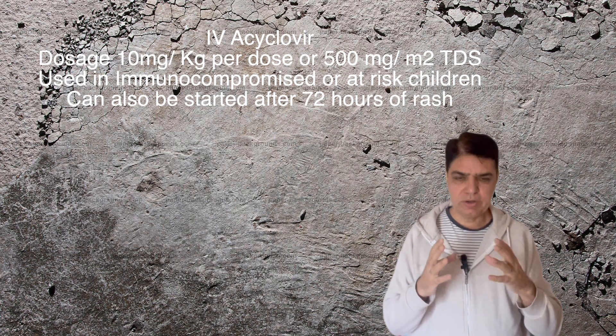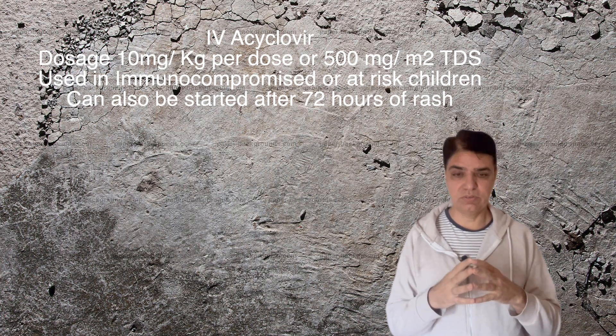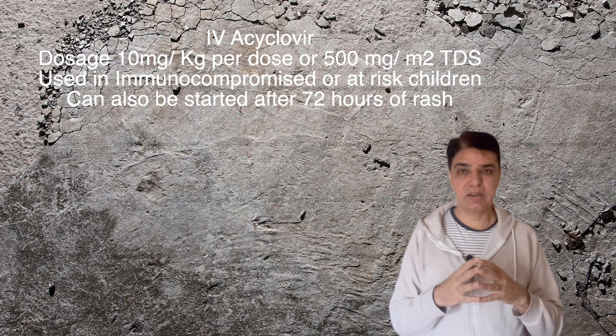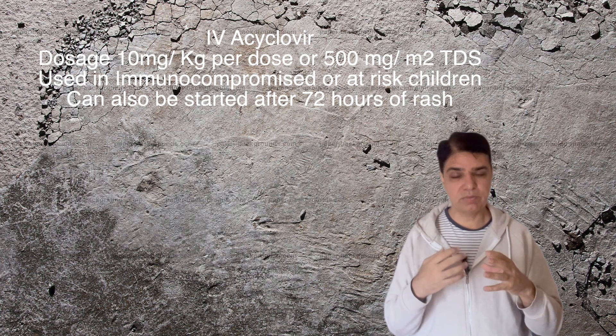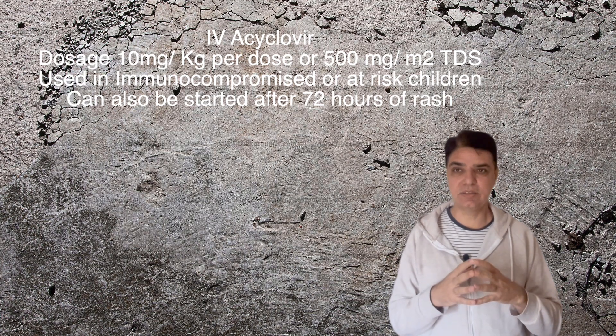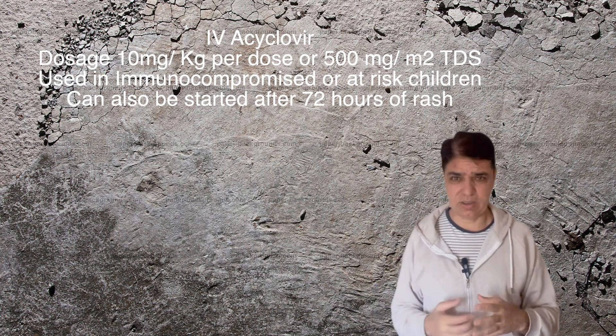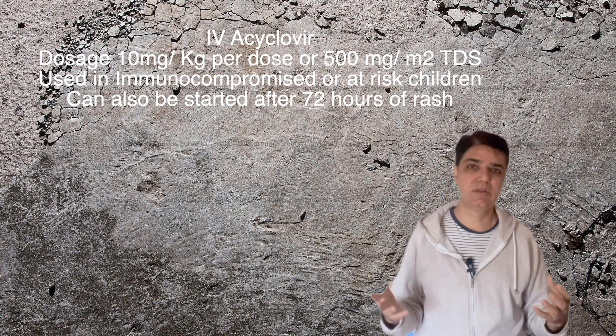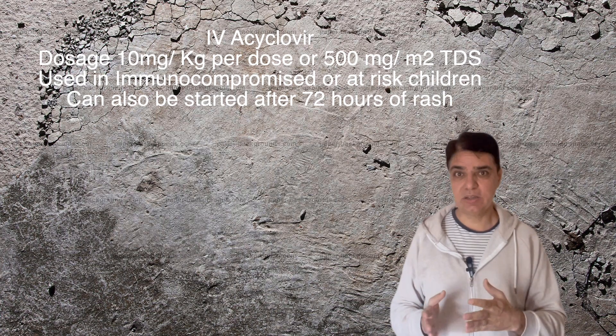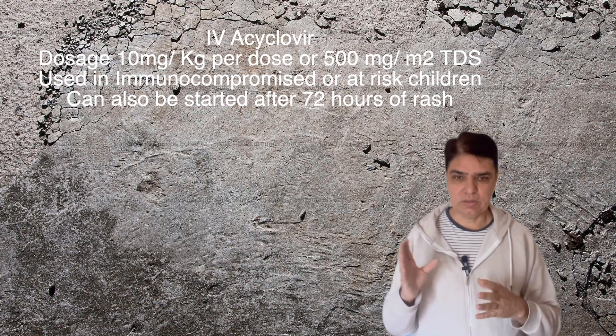The next question is: what complications of varicella might require intravenous acyclovir? IV acyclovir is used for severe varicella. Severe varicella can occur in immunocompromised individuals — those with primary immunodeficiency, or secondary immunodeficiency such as HIV-positive patients, or those on long-term steroid use, for example a child with asthma or a condition requiring chronic steroids.